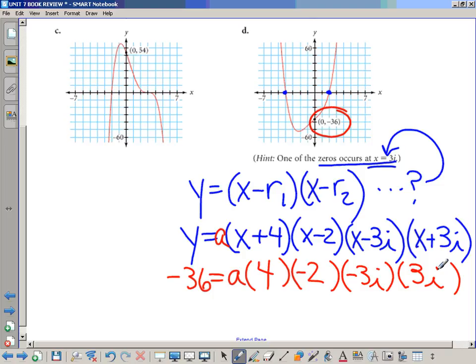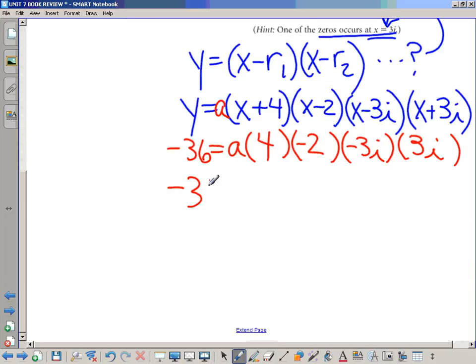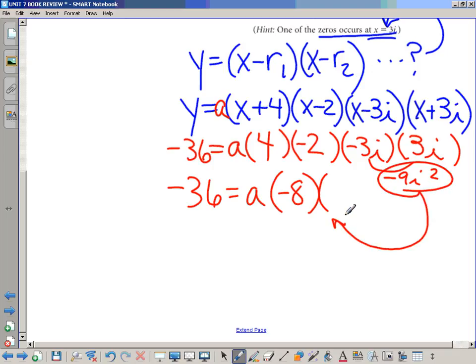I think a is going to be, well, I spoke too soon. I think it's going to be one half. And here's why. What's 4 times 2? 4 times negative 2 is negative 8. Negative 3i times 3i is positive 9. You're right, because it's negative 9i squared. And negative 9i squared is 9. The i squared turns the negative positive. So, we have negative 36 equals negative 72a, so a must be 0.5.